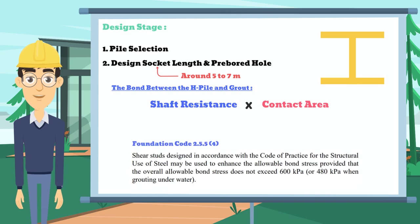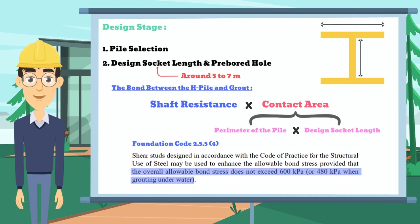According to the foundation code, the allowable bond stress between steel and grout is around 400 kPa. For the contact area, it is determined by the perimeter of the pile multiplied by the socket length. From this, we can find the bond friction of the H-Pile and grout.